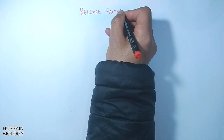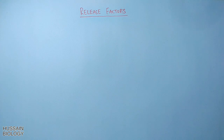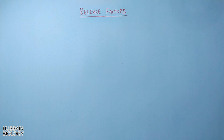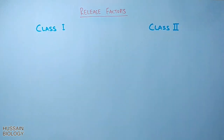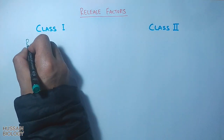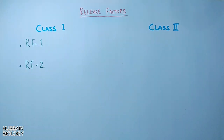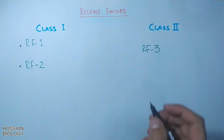In the translation process of prokaryotes we also have release factors. These release factors allow for the termination of translation by recognizing the termination codons or stop codons in the mRNA. There are two classes of release factors: class 1 and class 2. Class 1 consists of RF1 and RF2, whereas class 2 consists of only release factor 3.